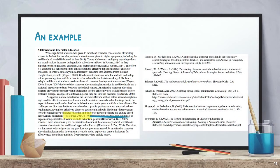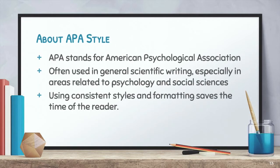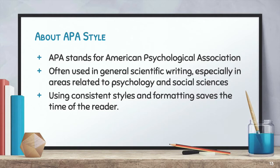This is another screenshot of the same references list just further down in the alphabet. Let's talk a little bit about APA style itself. APA stands for American Psychological Association. It's often used in general scientific writing, especially in areas related to psychology and social sciences. Using consistent styles and formatting, such as APA style, saves the time of the reader.